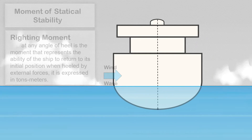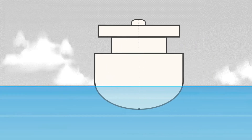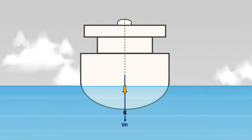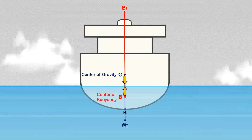Let us assume that the ship is floating in still water and in an upright condition. For a ship to float, it is acted upon by two vertical forces: a downward gravitational force, which corresponds to the ship's weight, acting through the ship's center of gravity; and the upward buoyancy force, acting through the ship's center of buoyancy.